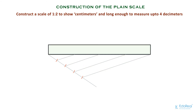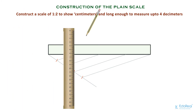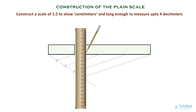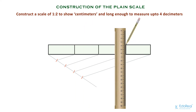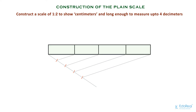Now give a height to the scale to make it look like a real scale. Draw the lines from the intersection points on the scale. These four parts are the main units of the scale. Let's mark the units now: assign 0 to the end of the first division, and continue numbering 1, 2, 3 at the end of every subsequent line. Each division is equivalent to 1 decimeter, so we have completed drawing the main units — the decimeters.